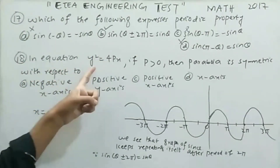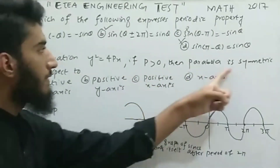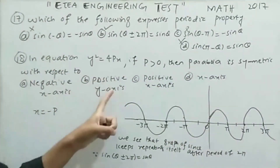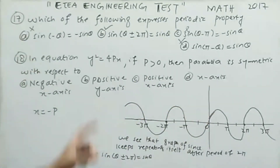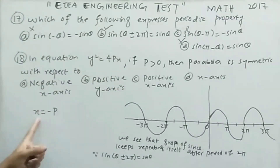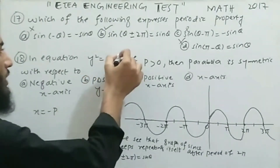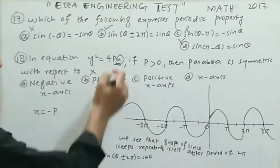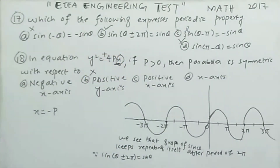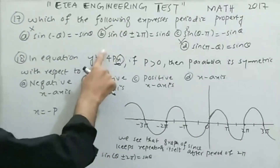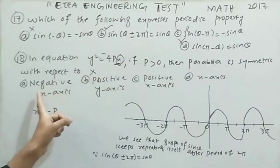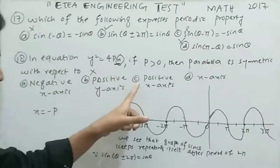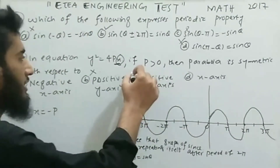MCQ number 18: for the equation y² = 4px with p > 0, the parabola will be symmetric with which axis? Since y² is on the left, the parabola lies along the x-axis — so we eliminate the y-axis options. Because the equation is y² = 4px (positive), the parabola lies along the positive x-axis. If it were y² = −4px it would be the negative x-axis. So the correct option is option number C.